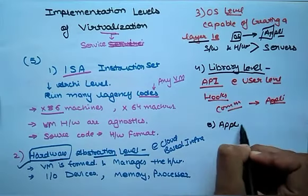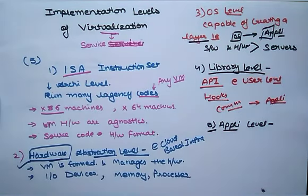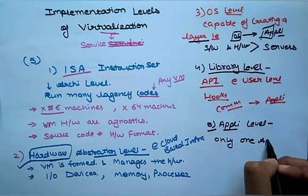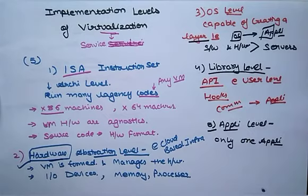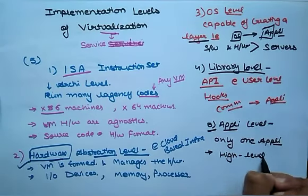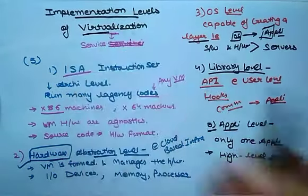The fifth and last level is Application level. The application level virtualization is used when there is a desire to virtualize only one application. One does not need to virtualize the entire environment of a platform. This is generally used when you run virtual machines that use high level languages, and these languages are compiled to be used in the application level of the virtual machine. So this is all about implementation levels of virtualization. Thank you so much.